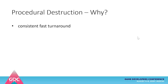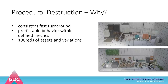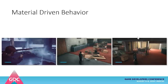Why go procedural? Because you need consistent, fast turnaround, predictable behavior within clearly defined metrics — knowing how many pieces something can break into — and we had hundreds of assets and variations: building blocks for rooms, walls, pillars, concrete railings, astral plane elements, plus props like desks, toilet cubicles, dividers, planters, computers, and telephones. With only one to three people on average working on all of that, we needed something we could unleash on tagged assets that wouldn't scale per-item.